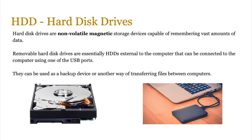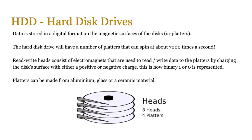Let's start by looking at magnetic storage devices. The most common one is the hard disk drive. These are non-volatile magnetic storage devices capable of remembering huge amounts of data. Removable hard disk drives are essentially hard disk drives external to the computer that can be connected using a USB port, and can be used as a backup device or for transferring files between computers. For both internal and removable hard disk drives, data is stored in a digital format on a magnetic surface of disks or platters. You'll have these round platters and each platter will have read and write heads on both sides. These platters can spin at about 7,000 times per second.